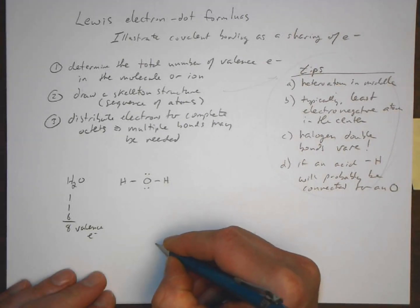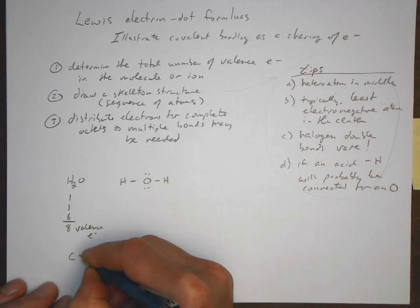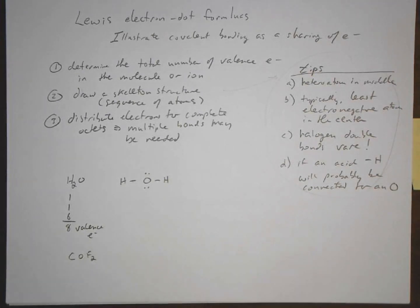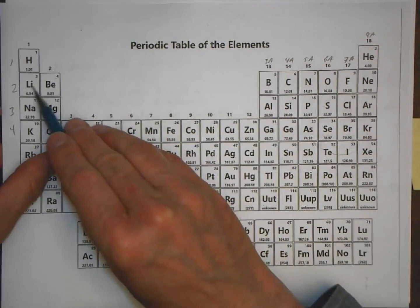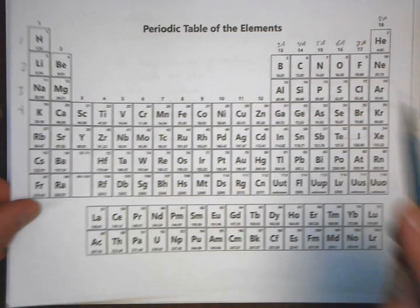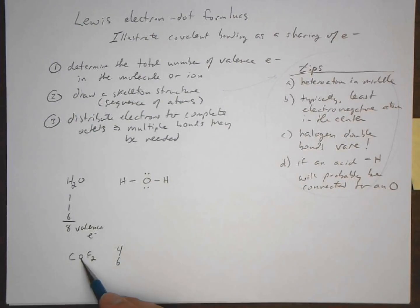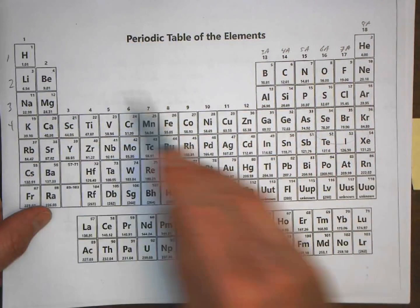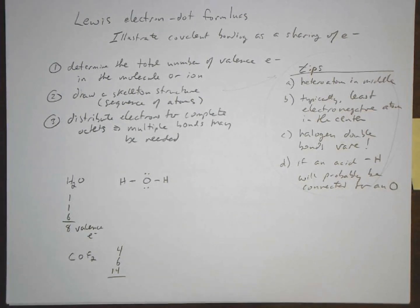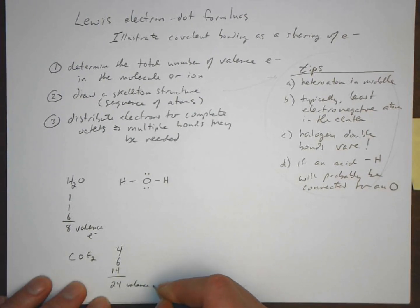Let's do another example: COF₂. First, find the number of valence electrons. Carbon has four valence electrons, oxygen has six, and fluorine has seven. Because there are two fluorines, that's 14 from fluorine. So in total: four plus six plus fourteen gives us 24 valence electrons.